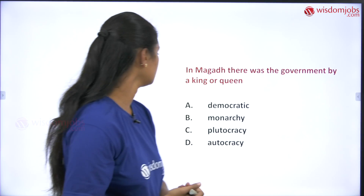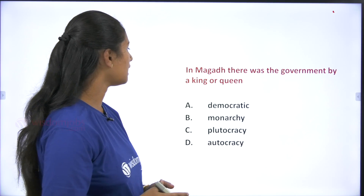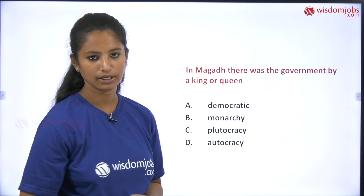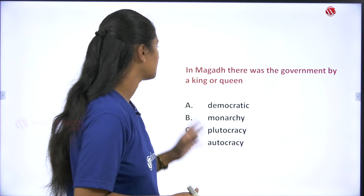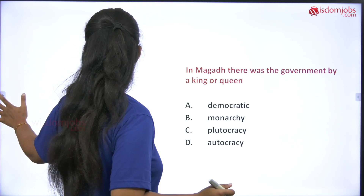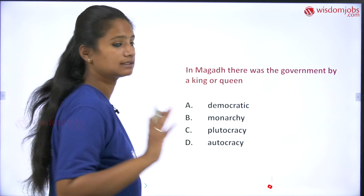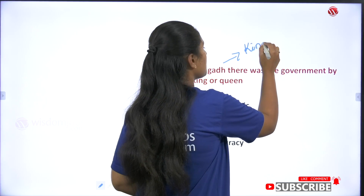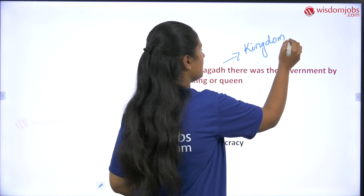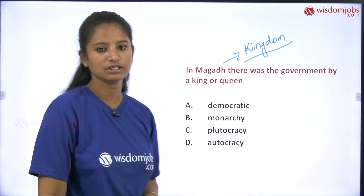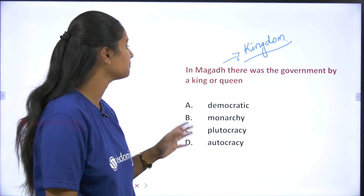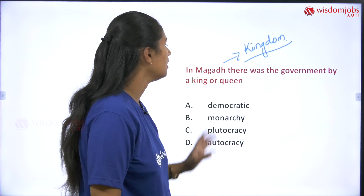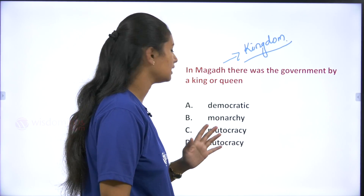Let us move on to the topic. Consider the Maghad kingdom — that is, the place we call Maghad Samrajya in Hindi. In Maghad, there was a government ruled by a king or queen. So what do we call a system of government where a king or queen rules?